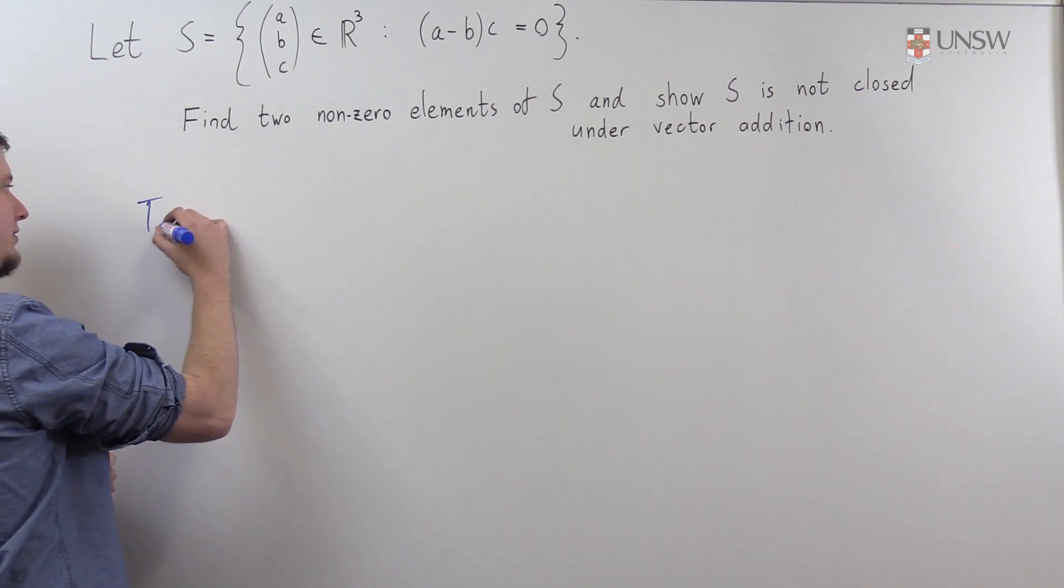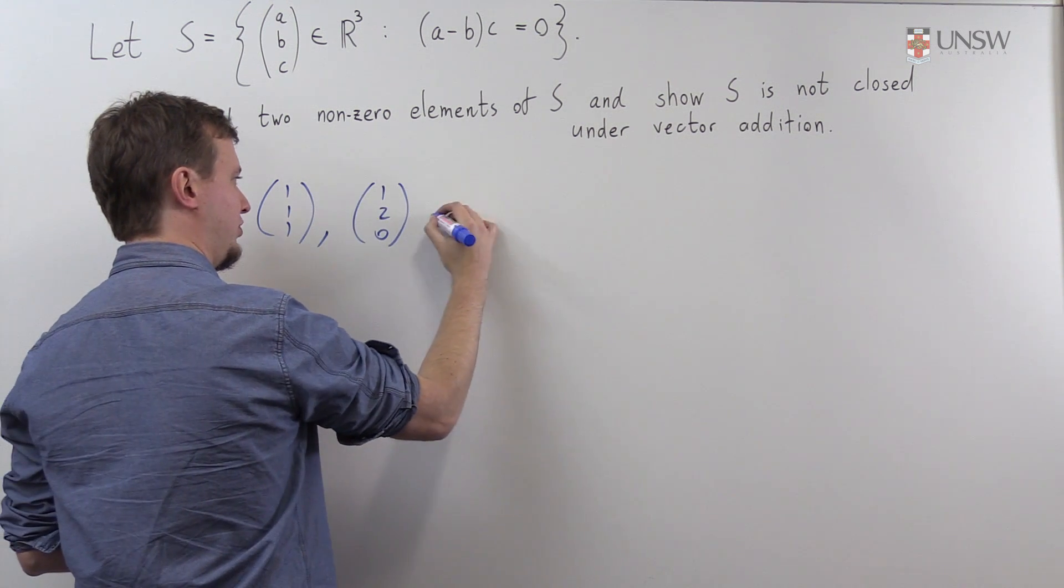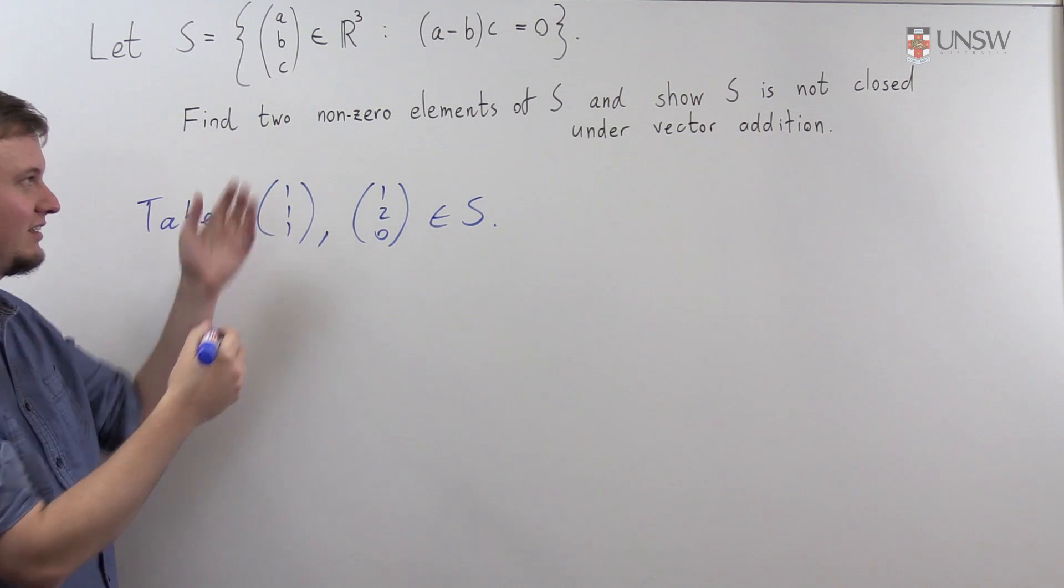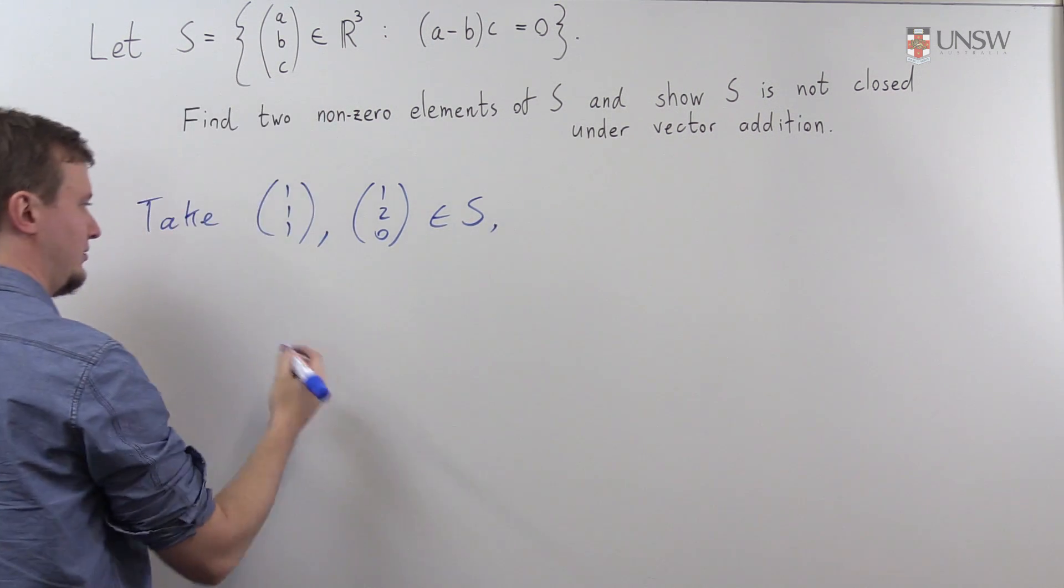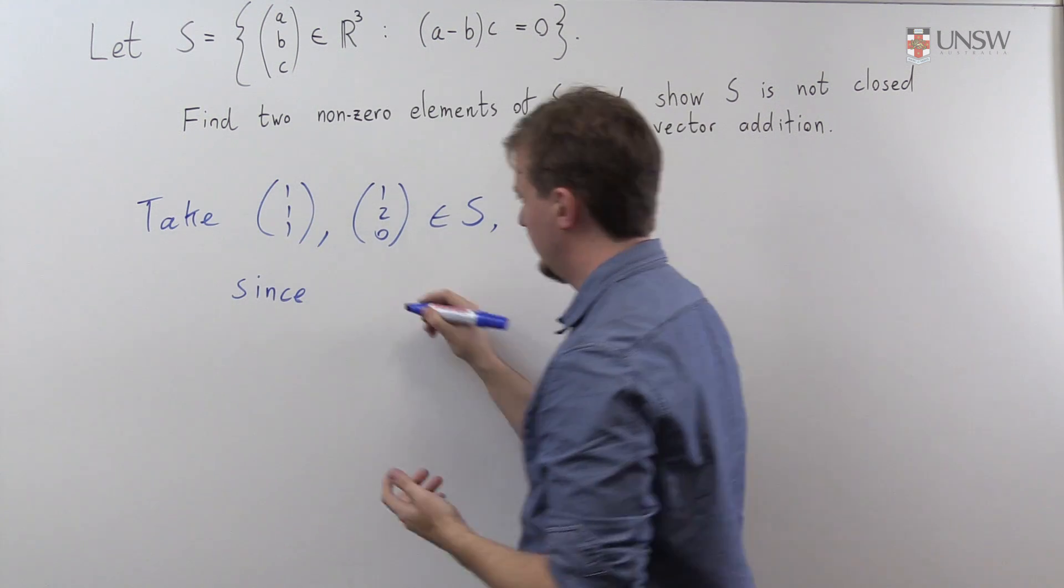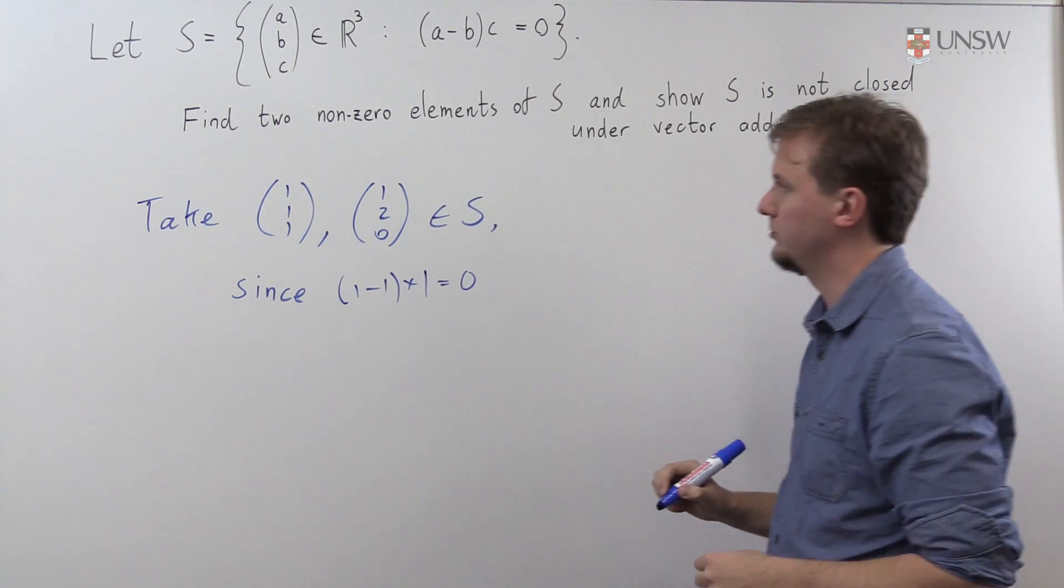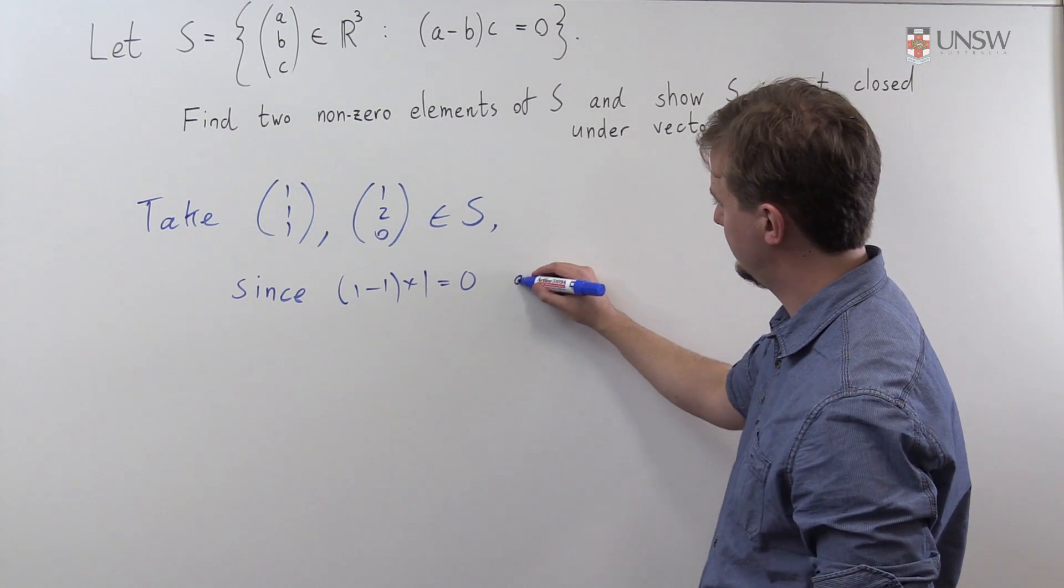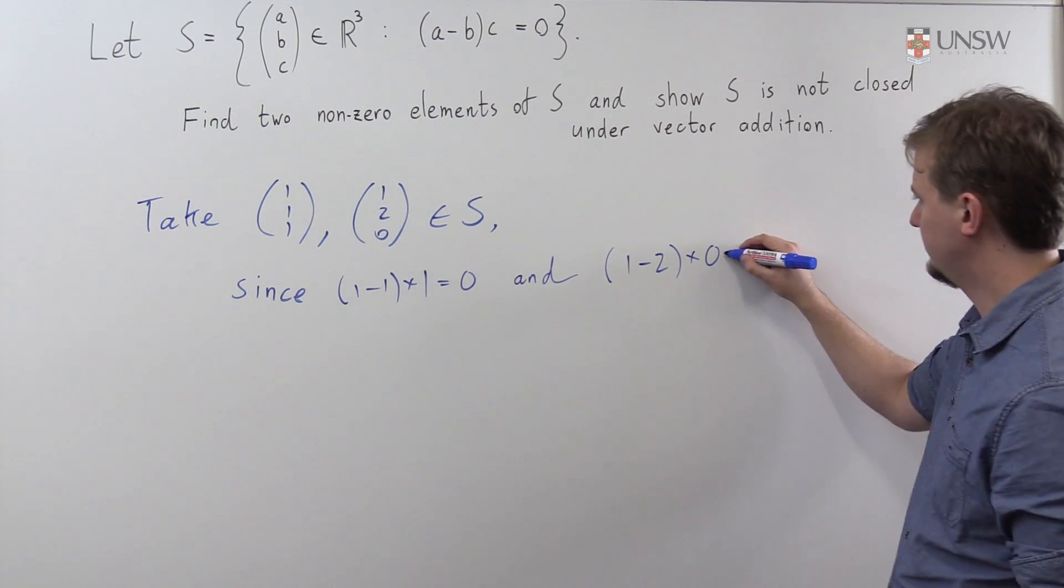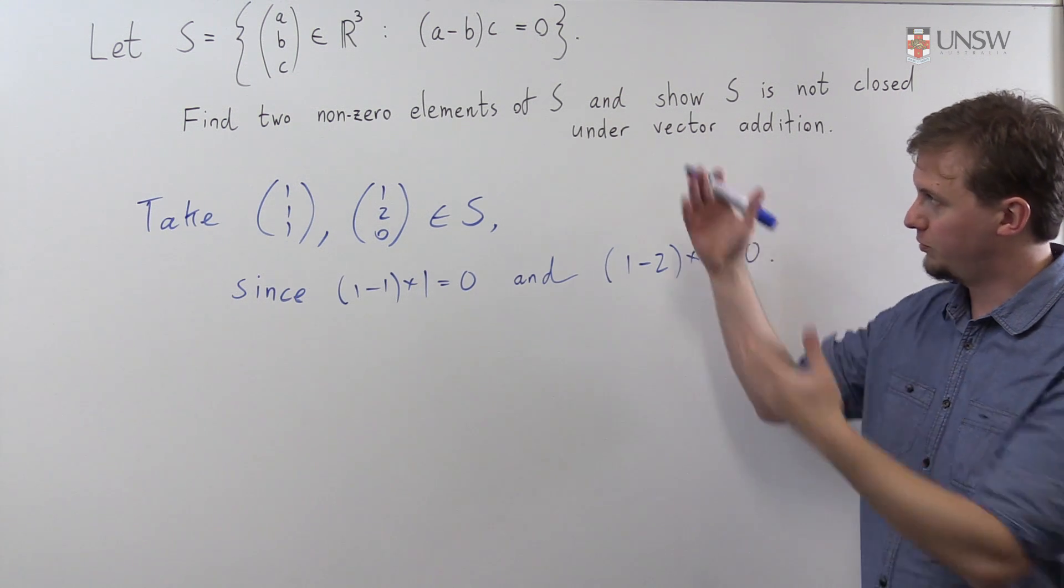So I'm going to take the vectors (1, 1, 1) and (1, 2, 0), which are both in S. But again, you shouldn't just take my word for that. Let's actually check that these are in the set S. So why are these in S? Well, these are in S since we take this first vector here. Since 1 minus 1 times 1 is equal to 0, so it satisfies this equation. And for this second vector, we have 1 minus 2 times 0, which is obviously equal to 0. So we've found two non-zero vectors which both sit inside S.